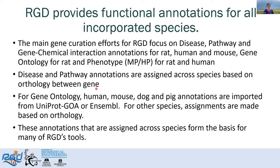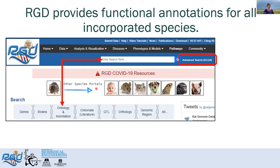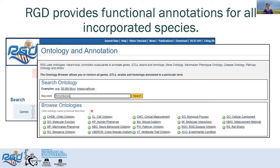These annotations that are assigned across species form the basis for many of RGD's tools. You can search for vocabulary terms and annotations to those terms using either the general search or this ontology and annotation-specific search, or using the advanced search Olga. You can browse through any of our ontologies or enter specific terms into this search box to find a specific term across the ontologies. Here I've entered thrombosis, which is the example I'm going to use for all of my disease-related information.